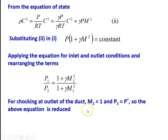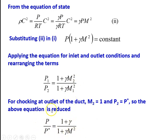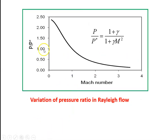For the choking condition at the outlet, where M2 = 1 and P2 = P*, the equation reduces to: P/P* = (1 + γ) / (1 + γM²). This gives the variation of pressure at any Mach number relative to the choking condition pressure P*. We can plot this pressure ratio variation with respect to Mach number: P/P* = (1 + γ) / (1 + γM²), and the pressure ratio decreases with increasing Mach number. For γ = 1.4, specific values can be calculated.